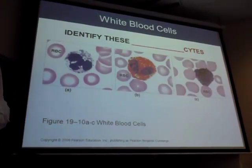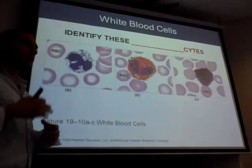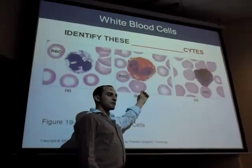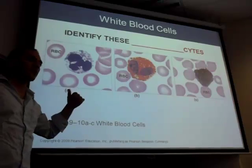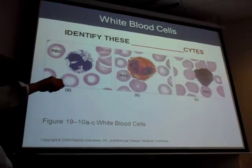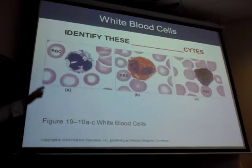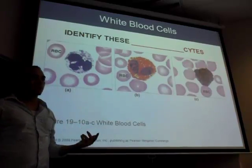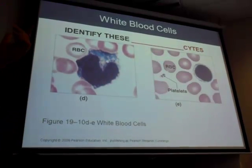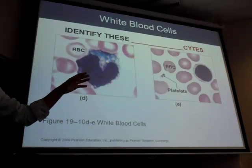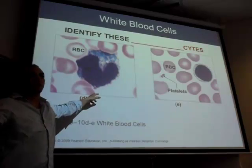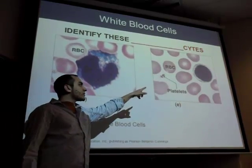We also cover this in lab. Granulocytes: the first granulocyte is the neutrophil, then the eosinophil — another name you'll see is acidophil — and then the basophil. They all end in '-phil,' meaning filled with granules. These are not granulocytes; they are agranulocytes. One is the monocyte, which will turn into a macrophage, and the other is the lymphocyte.